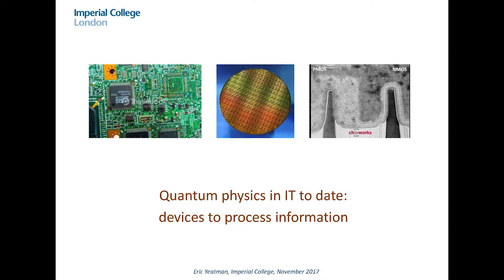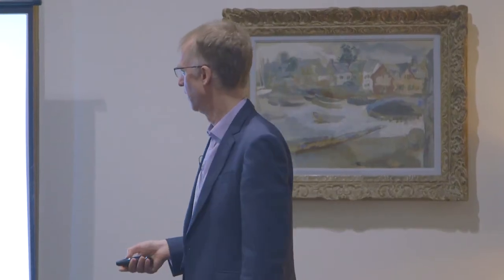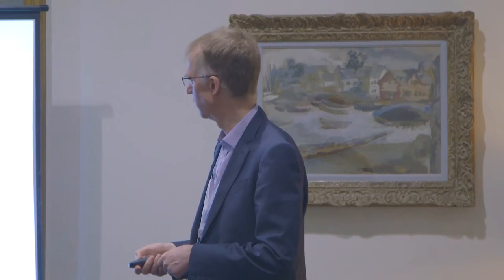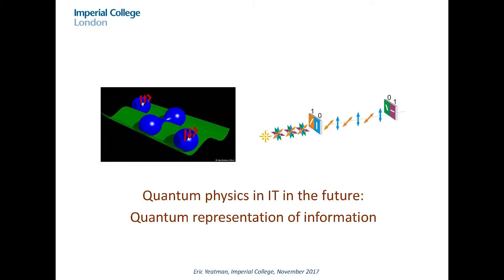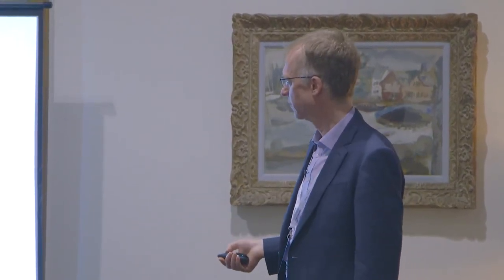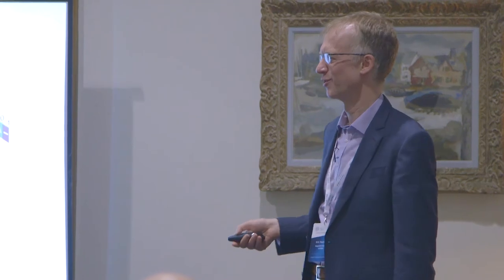That is an established commercial technology which you can go out and buy to power things like the processing in your mobile phone. But what's changing now is that rather than just quantum mechanics being associated with the functioning of devices that process information, we're actually starting to represent information in the quantum domain in real devices and real systems that are starting to find their way into commercial applications. You're going to hear something specific about that from Mario shortly.